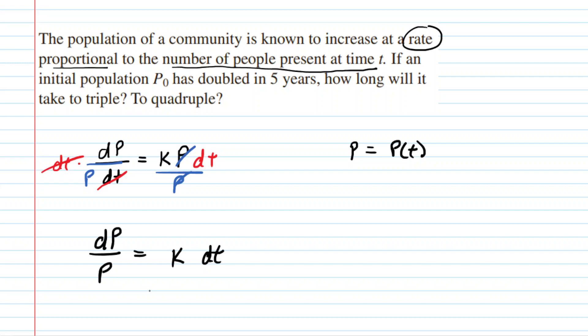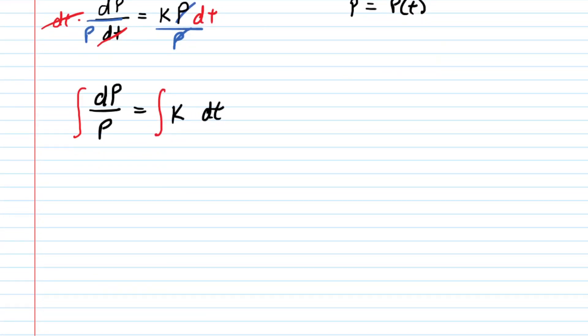Now, our goal is to solve this for the population, for P. To do that, we simply integrate both sides of this equation after we have separated the variables. You may recall from a calculus course that the left side integral will become the natural log of the absolute value of P, and on the right side, when you're integrating a constant with respect to the variable t, you end up with k multiplied by t, plus an arbitrary constant. We'll be solving for that momentarily.